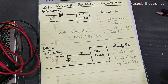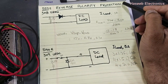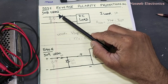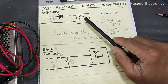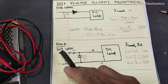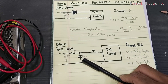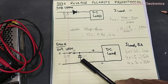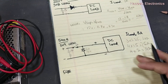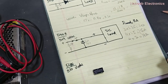Assalamu alaikum warahmatullahi wabarakatuhu, friends. Welcome back to my channel. This video is about reverse polarity protection in DC circuits. It is our third video in this series. In the first video we discussed how to use a rectifier diode for protection, in video 540 we discussed diode shunt protection, and in this third video, number 541, we will discuss how to use a relay to protect our DC circuits.